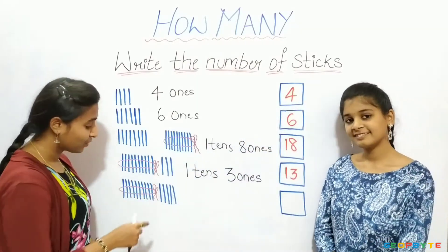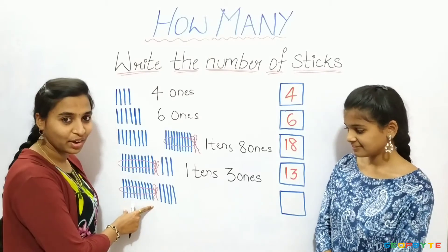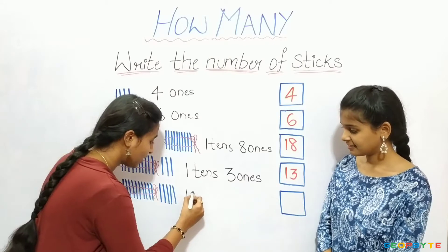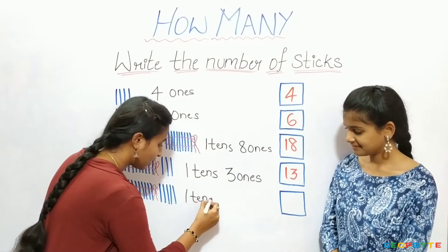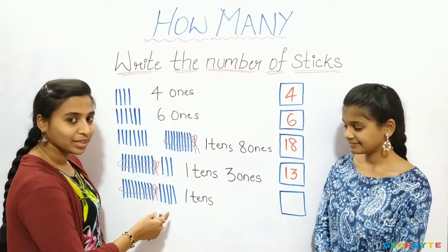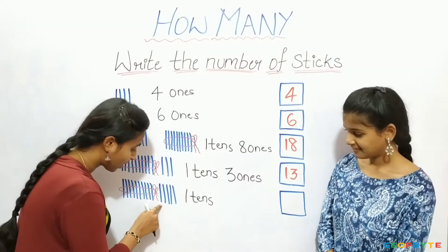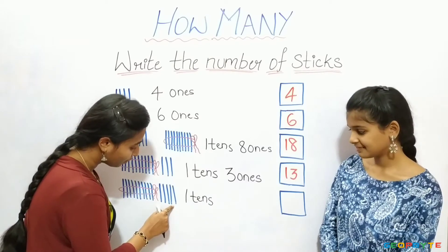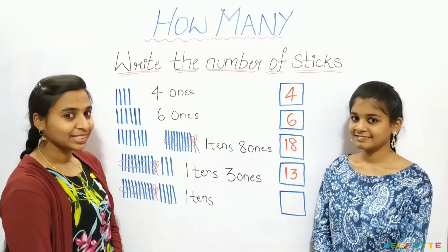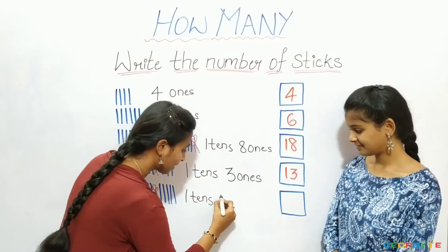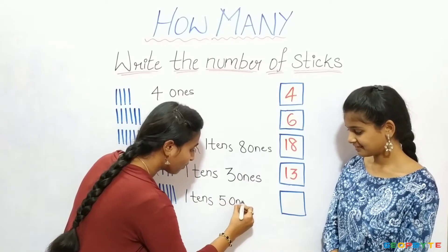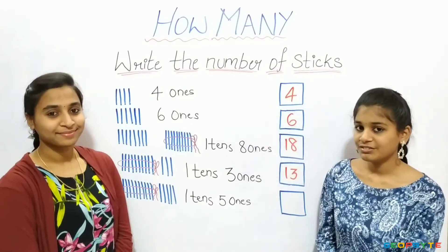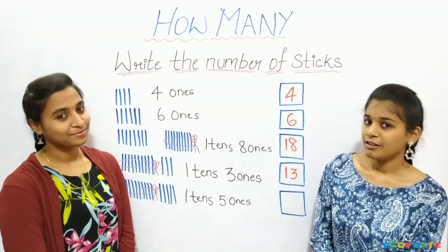Now see this. We already have a bundle of ten sticks. That is one tens. Now let us count these sticks. One, two, three, four, five. Five sticks. That is five ones. One, five — fifteen. Let us write fifteen.